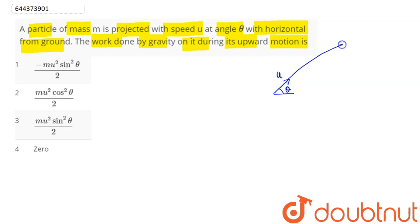So we can say work done by gravity force, hence gravity force on this particle will be acting downward. So work done is equal to we have f into s into cos of angle between the force and displacement.